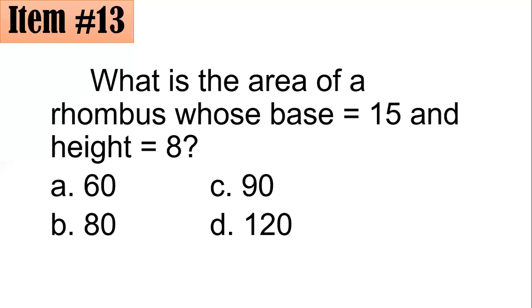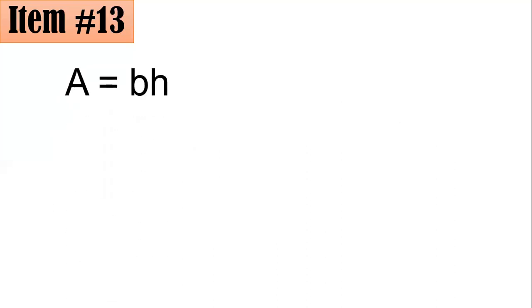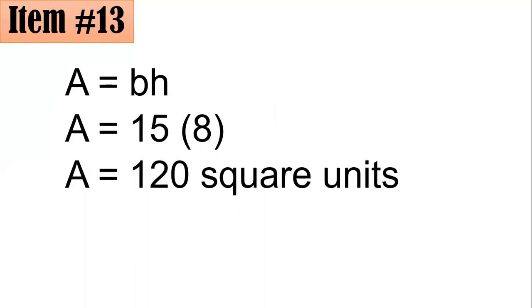Number 13. What is the area of a rhombus whose base equals 15 and height equals 8? Is it 60, 80, 90, or 120? To get the area of a rhombus, we use the formula area equals base times height. So A equals 15 times 8, which gives A equals 120 square units. If you answered D, great job.